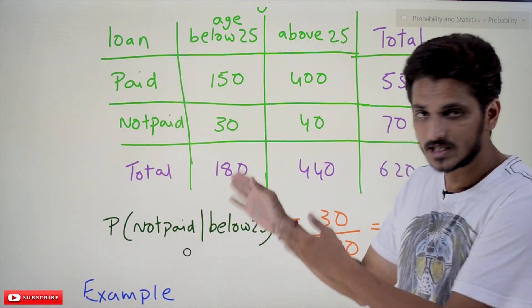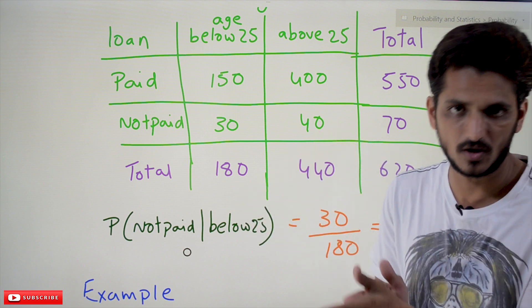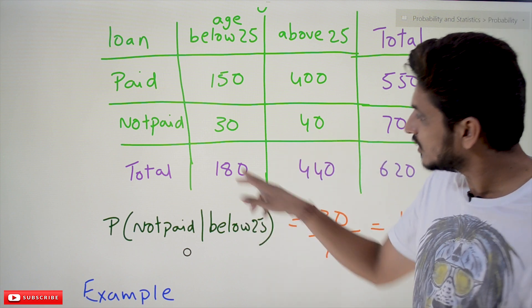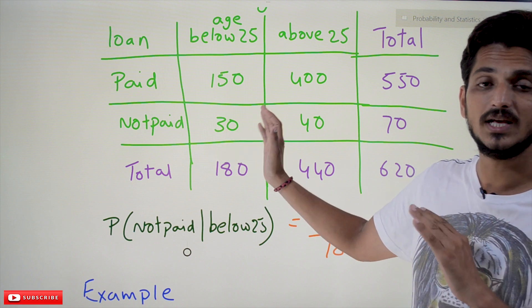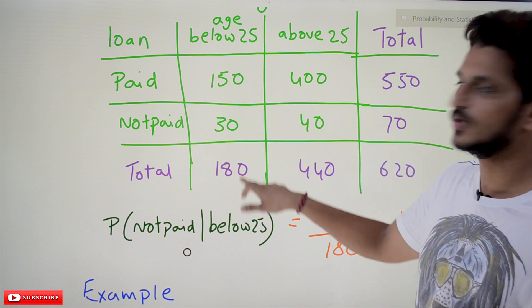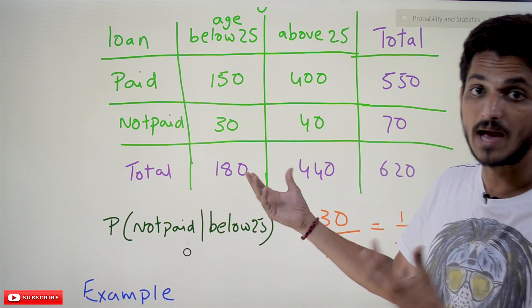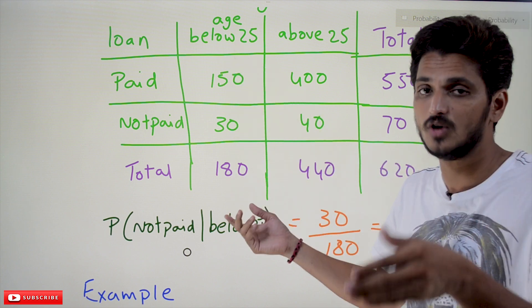Out of the 180, 30 has not been paid. So the probability is much more in below 25. That's why sample space changes. This is the point you have to understand - why it is changing. We already discussed in our previous class when we discussed about conditional probability.